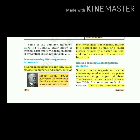Several microorganisms not only cause diseases in humans and plants but also in other animals. For example, anthrax is a dangerous human and cattle disease caused by bacteria. Foot and mouth disease of cattle is caused by a virus. Robert Koch, in 1876, discovered the bacterium Bacillus anthracis, which causes anthrax disease. Several microorganisms cause diseases in plants like wheat, rice, potatoes, sugarcane, orange, apple and others. The disease reduces the yield of crops. See Table 2.2 for such plant diseases.